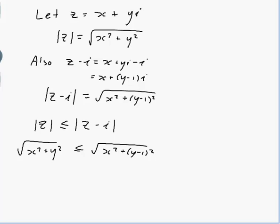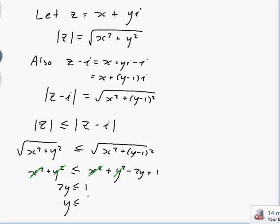Now they're both positive numbers so if I square them it won't change the inequality, so x² + y² ≤ x² + y² - 2y + 1. Okay so let's see, I have an x² on both sides so they'll cancel out and I have a y² on both sides so they'll cancel out, so I just get 2y ≤ 1, y ≤ 1/2.